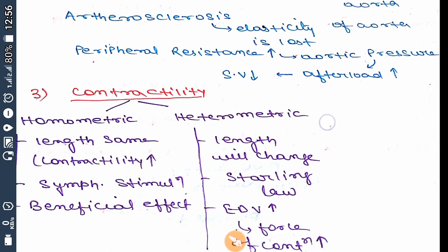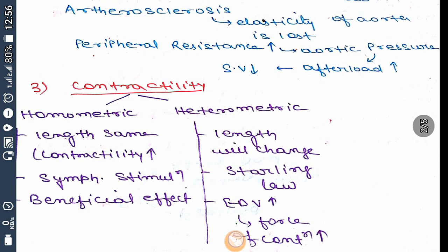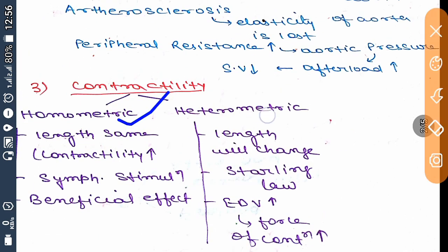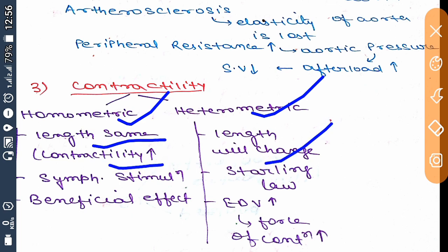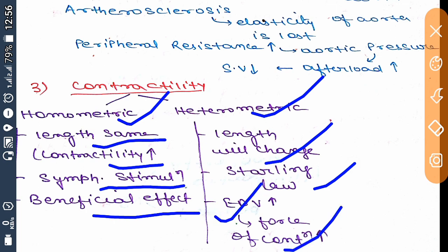Now coming to contractility. There are two types: homeometric contraction and heterometric contraction. Homeometric means length is the same while force of contraction increases. In heterometric contraction, length changes. Homeometric contraction occurs by two methods: either by sympathetic stimulation to the ventricle or by a beneficial effect. Heterometric contraction is guided by Starling's law, in which an increase in end-diastolic volume increases force of contraction.